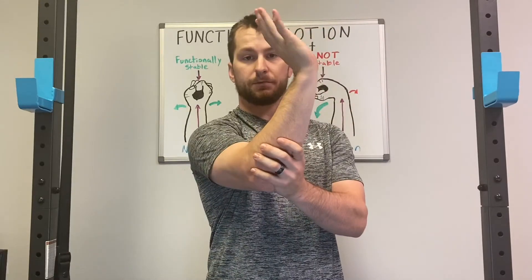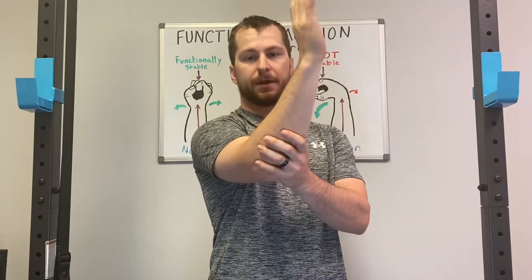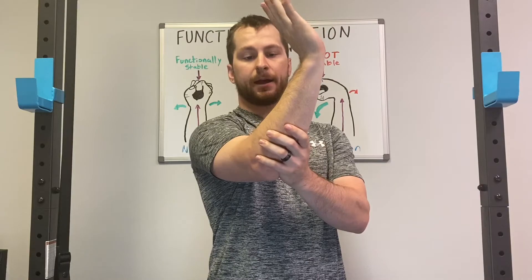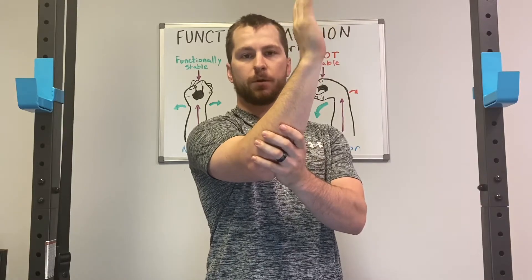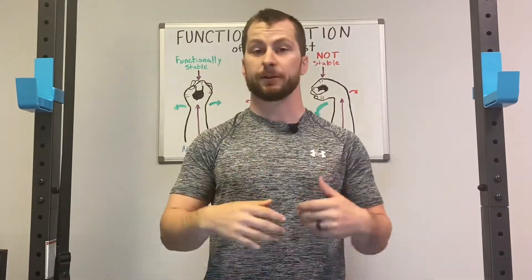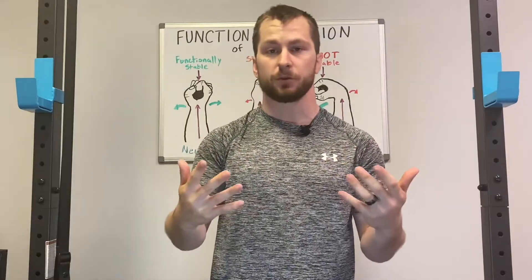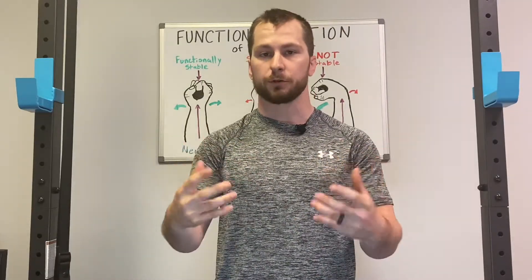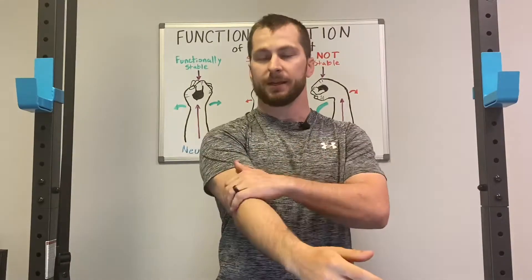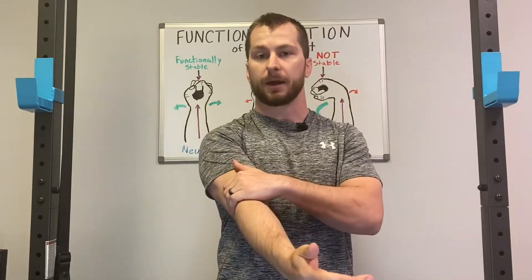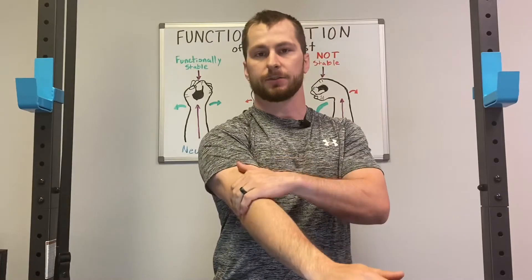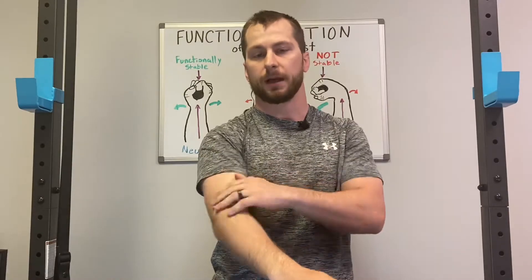The opposite of that is wrist extension — your wrist extending back towards the posterior side of the forearm. That's going to be controlled by your extensor digitorum group, which is a group of muscles that all connect to a common tendon attaching on the lateral epicondyle. The flexors attach on the medial epicondyle; extensors on the lateral epicondyle.